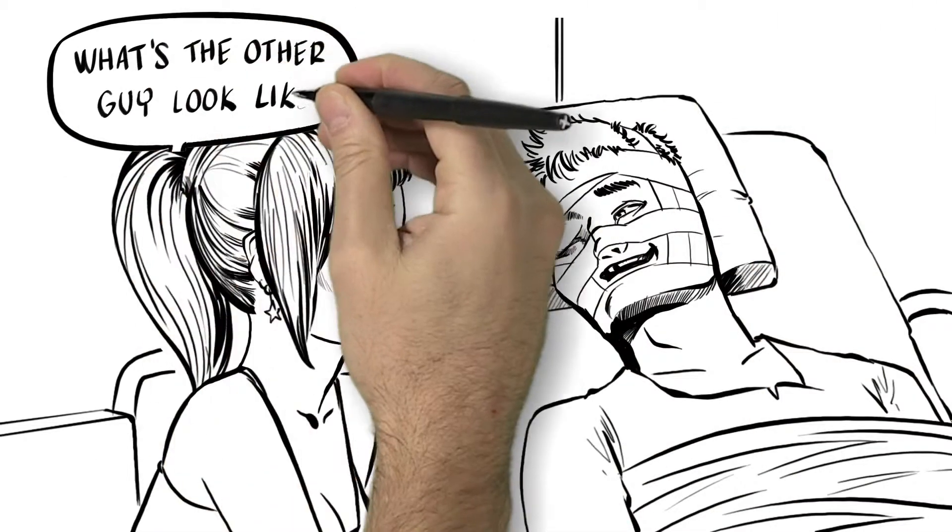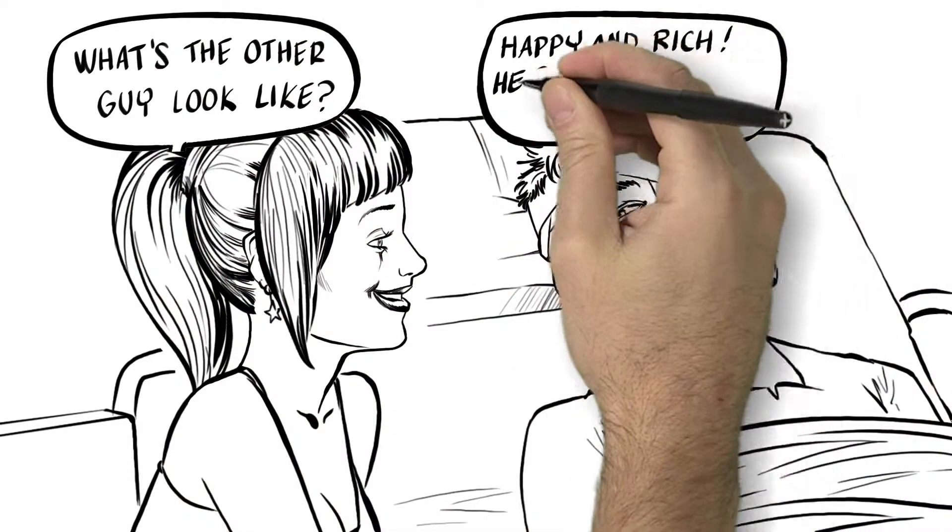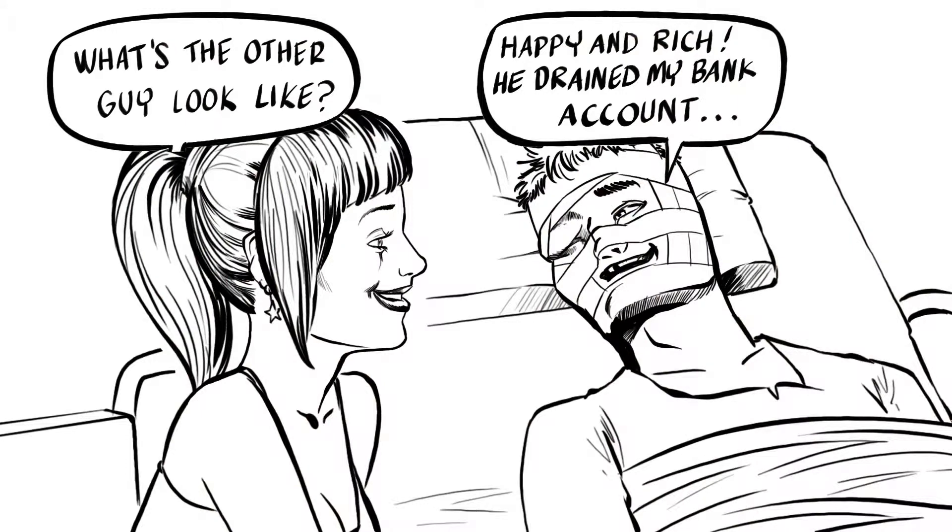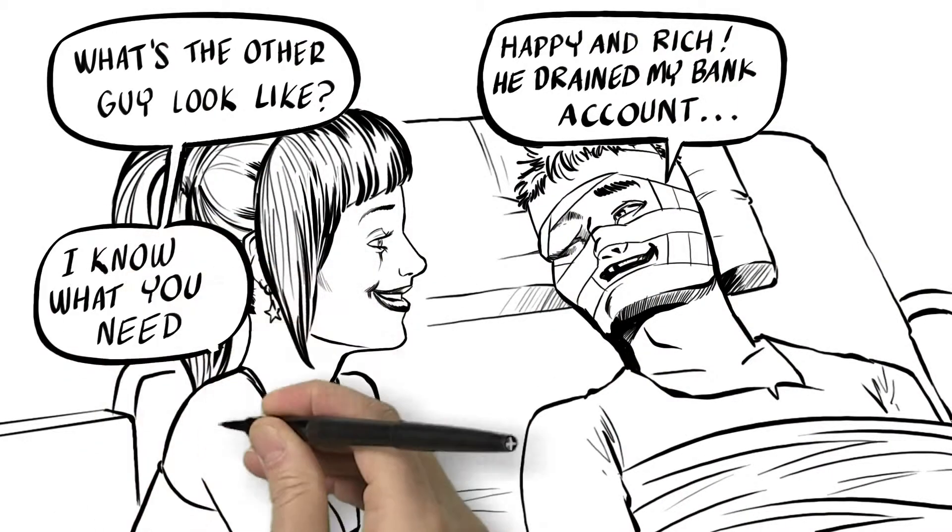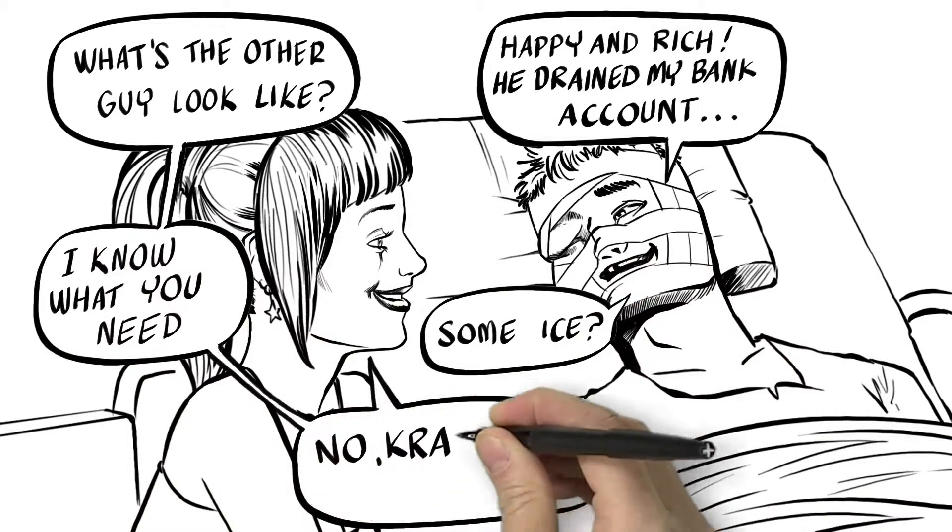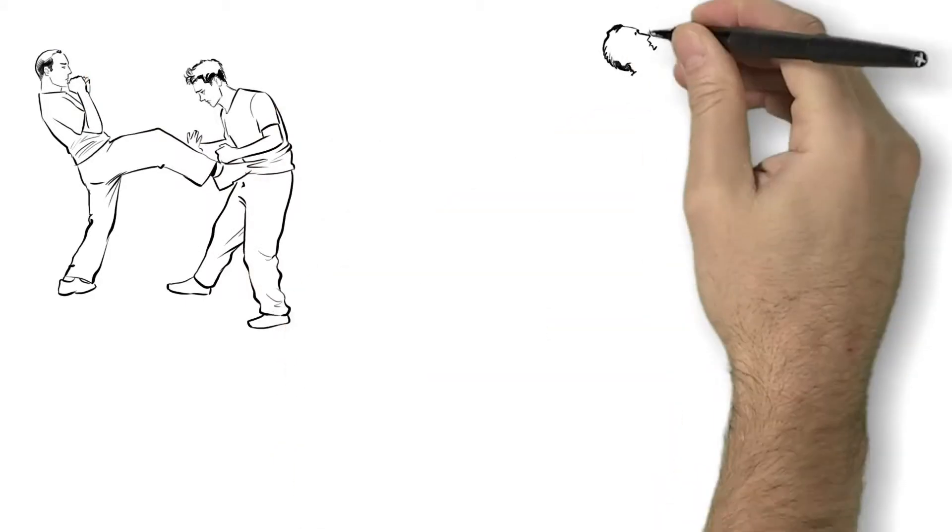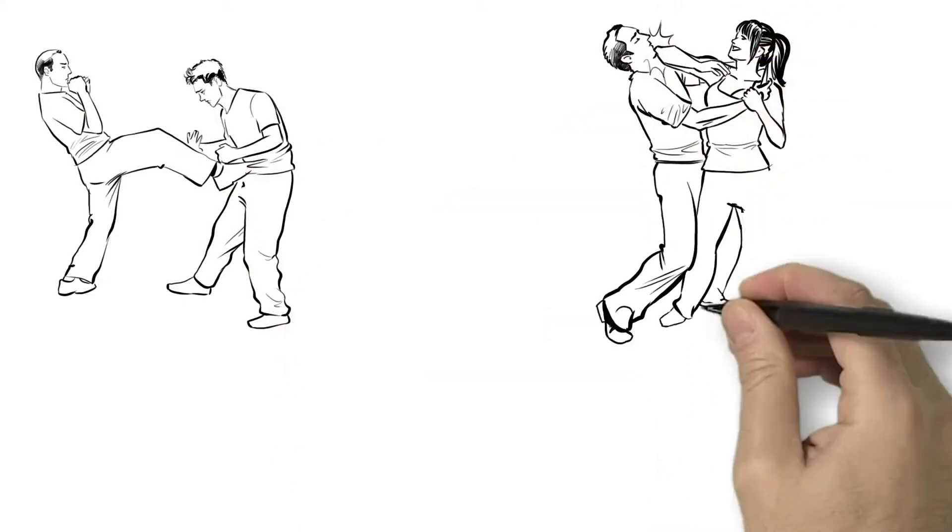What's the other guy look like? she asked. Blake winced. Happy and rich. He drained my bank account. I know what you need, she said. Some ice? No, Krav Maga training. After three months of hard, intense training, Blake was a new man.